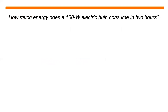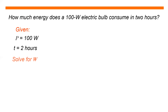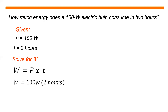Problem: how much energy does a 100 watt electric bulb consume in two hours? Given: P equals 100 watts, T equals two hours. Solving: energy equals power multiplied by time, that is 100 watts multiplied by two hours, giving 200 watt hours.